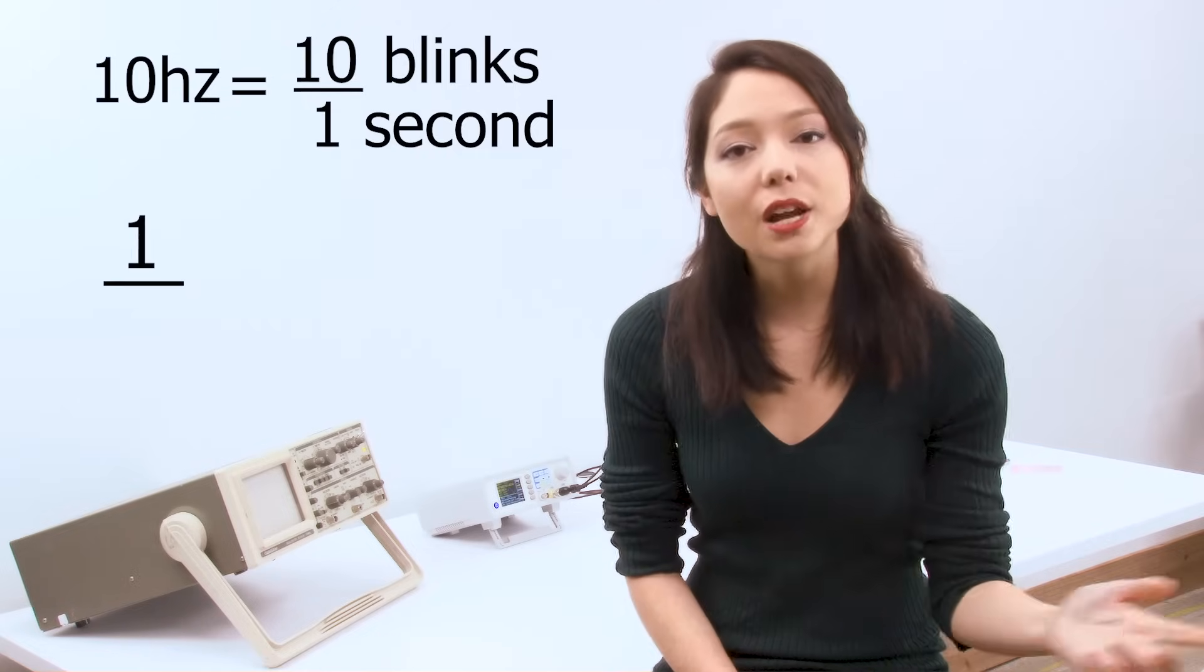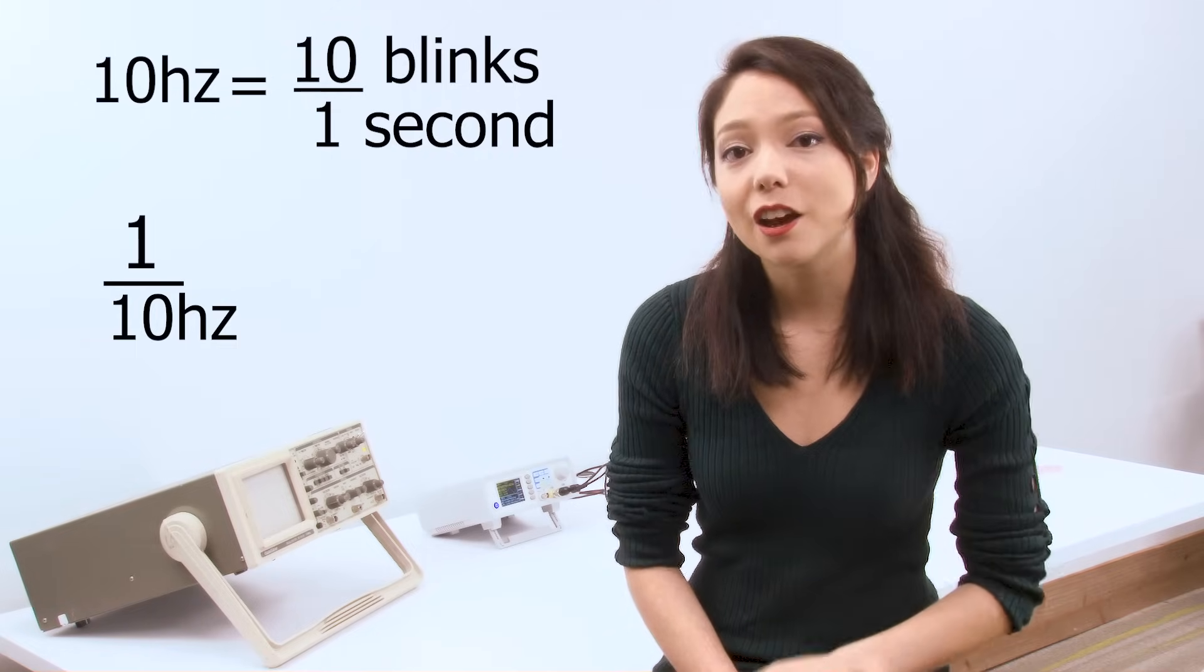Okay, so let's get a little bit mathy for a second here. Rolling up the sleeves for the math. Let's say that a street lamp is flickering at 10 hertz. That means it blinks 10 times each second. One divided by 10 hertz gives us a period of 0.1 seconds.